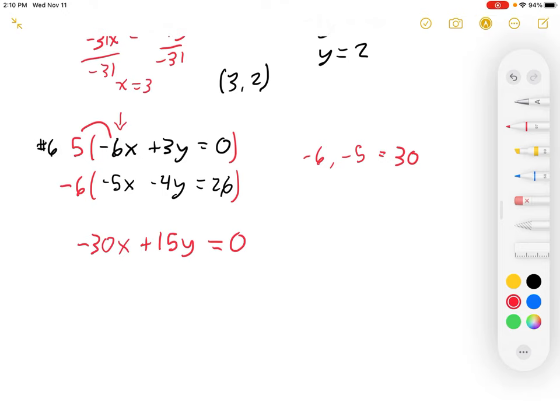And then I'm going to go ahead and do negative 6. So negative 6 times negative 5, that's going to be positive 30x. That's why I multiplied by negative 6, to make sure that we had opposite signs, plus 24y. And I don't have 26 times 6 on my fingertips. That'll be 156.